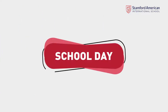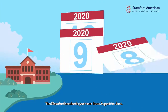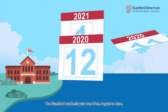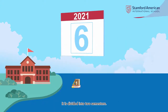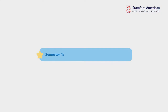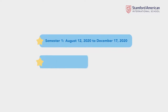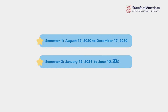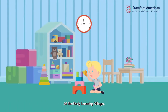School Day. The Stamford academic year runs from August to June and is divided into two semesters. Semester 1: August 12, 2020 to December 17, 2020. Semester 2: January 12, 2021 to June 10, 2021. At the Early Learning Village, all children start at 9 a.m.